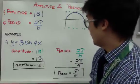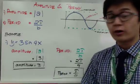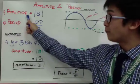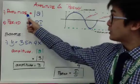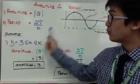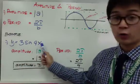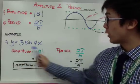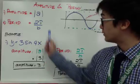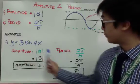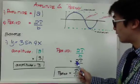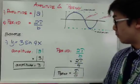For our first example, we have y equals 3 sine 4x. To graph it, you need the amplitude and the period. The amplitude is given by the absolute value of a, and the period is equal to 2π over b. For 3 sine 4x, the amplitude is the absolute value of 3, which is simply 3. The period is 2π over 4, which gives us π over 2.